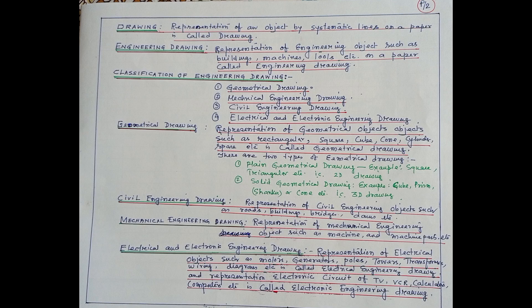This is the classification of engineering drawing on the right side of the page. The classification of engineering drawing includes: first, Geometrical Drawing, which covers Plane Geometrical and Solid Geometrical drawing; second, Civil Engineering Drawing; third, Mechanical Engineering Drawing; and fourth, Electrical and Electronics Engineering Drawing.